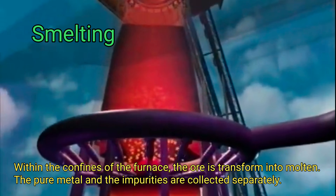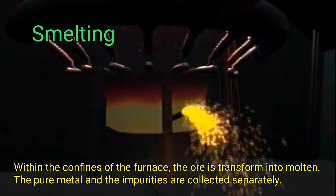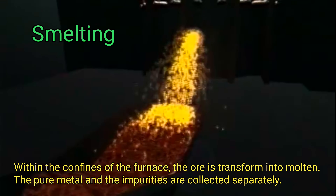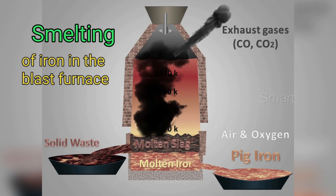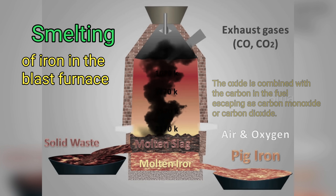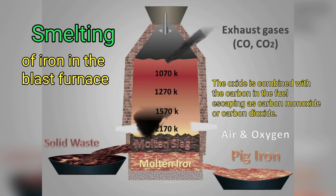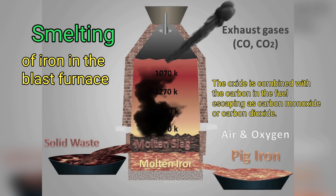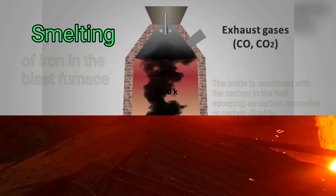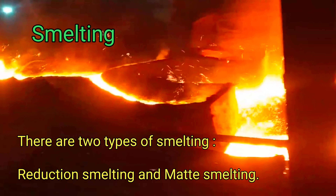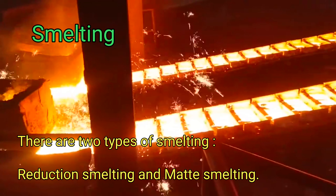Within the confines of the furnace, the ore is transformed into molten. The pure metal and the impurities are collected separately. For example, iron oxide ore is heated to a high temperature in the blast furnace, and the oxide is combined with the carbon in the fuel, escaping as carbon monoxide or carbon dioxide. Other impurities called gangue combine with the flux to form a slag, which is separated from the pure metal and produced as a by-product. There are two types of smelting: reduction smelting and matte smelting.